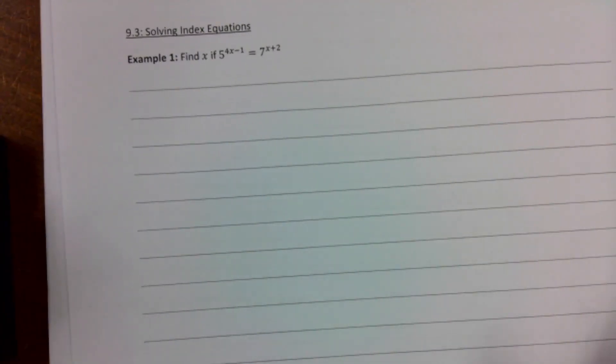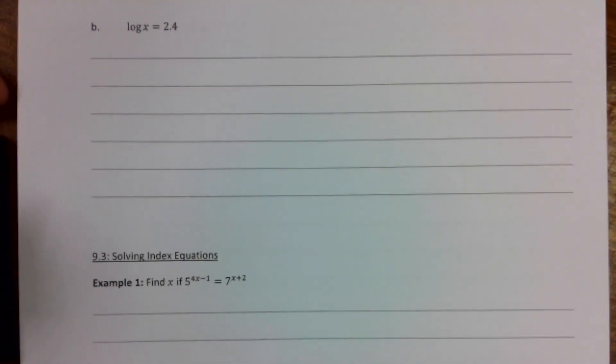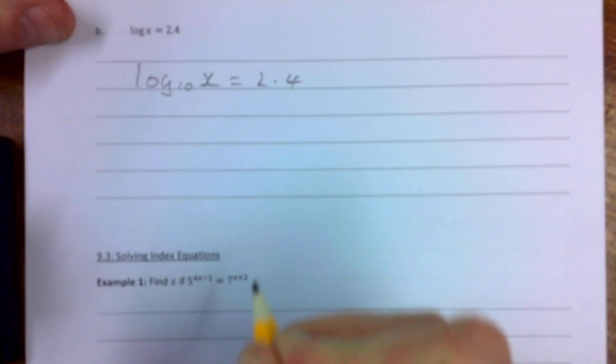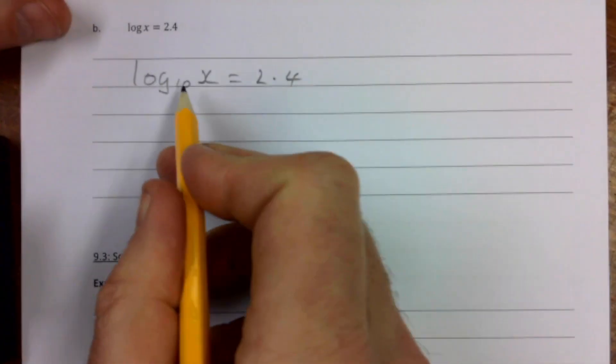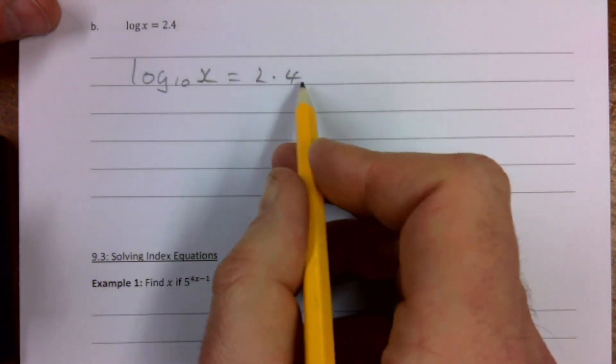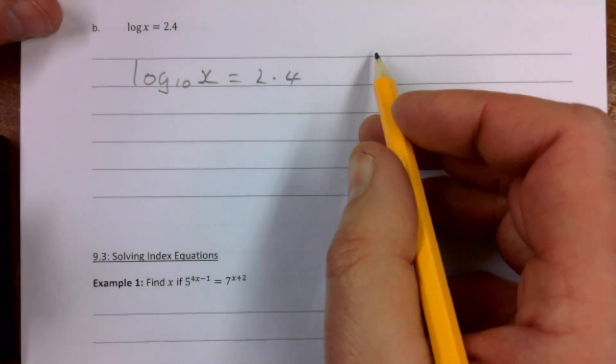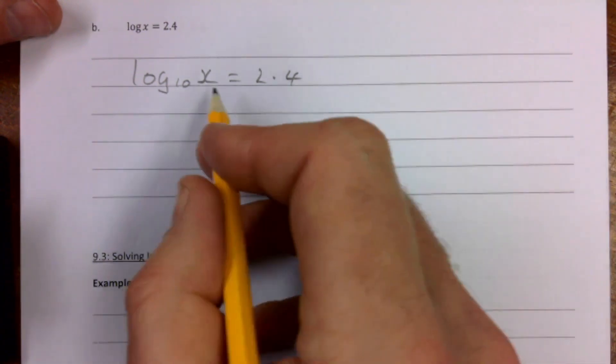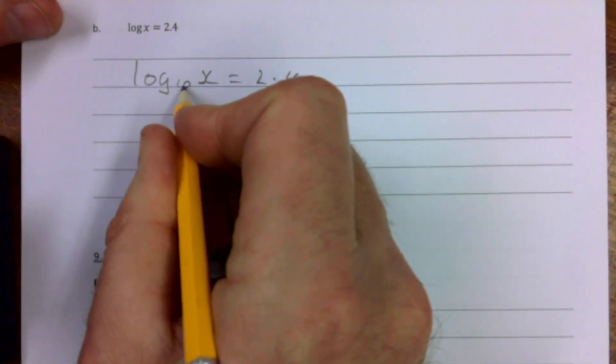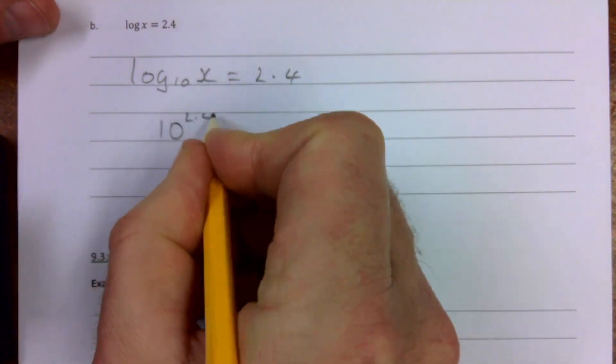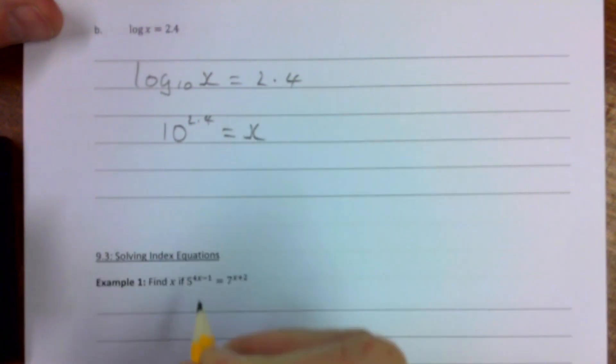One final example here. Again, there's no base in there, so we assume it's base 10. So we have log to the base 10 of x is equal to 2.4. And we're just going to use the definition of what a log is. If you're not sure, I would look back to my log to the base 10 of 1,000 equals 3 and see if you can kind of get your head around that. But that means 10 to what power gives me this? So it means 10 to the power of 2.4 equals x.